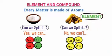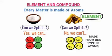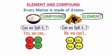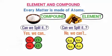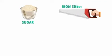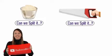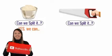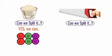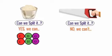Salt is a compound because it is made of two different types of atoms. Second example: consider sugar and an iron sheet. Can you split sugar? Can you split iron? For sugar, yes — we can split it into three different types of atoms: carbon, hydrogen, and oxygen.